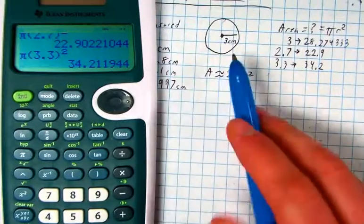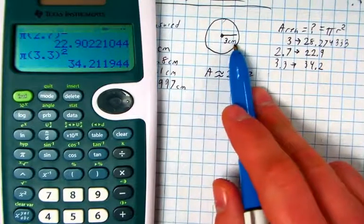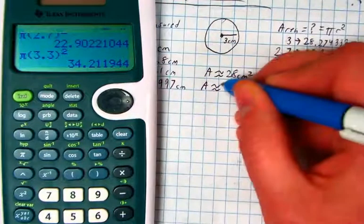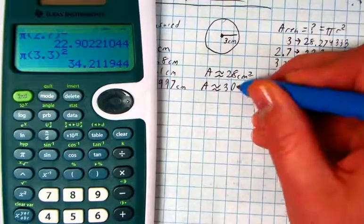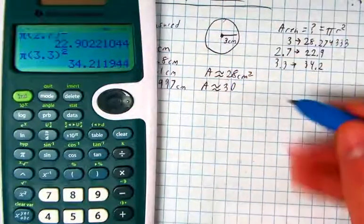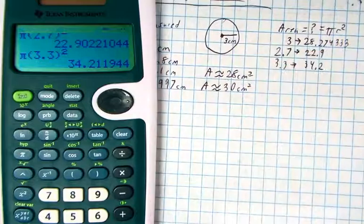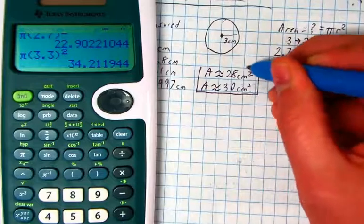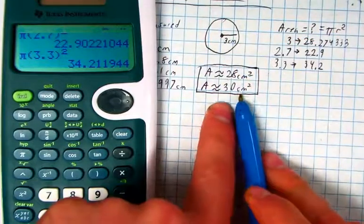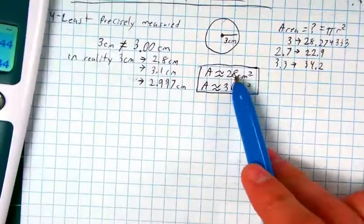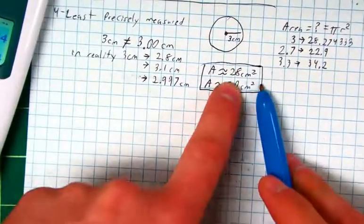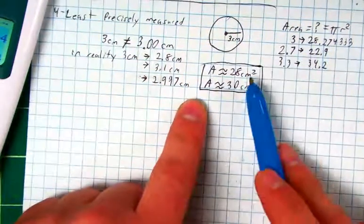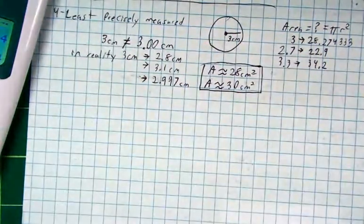And in reality, even this answer isn't even correct because there's only one digit there. And so we're not even that sure about the 28. In reality, the answer should be around or should be exactly 30. You should round up to the nearest significant digit centimeters squared, but I would accept 28 personally. But the point is, we're not that certain of this number. Therefore, we can't be this certain of the calculation based on it.